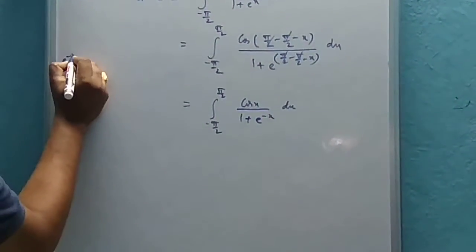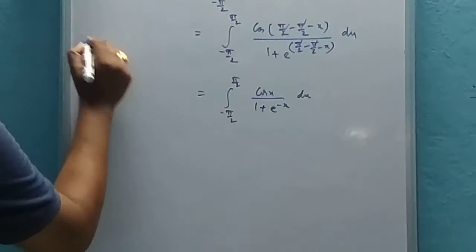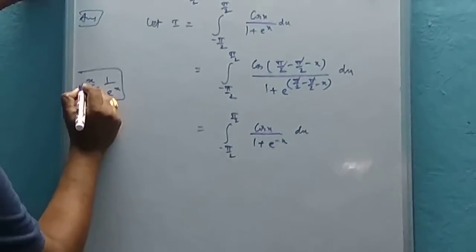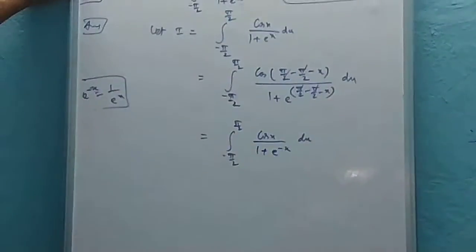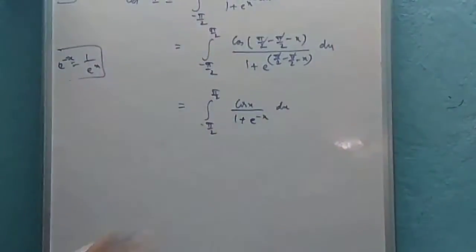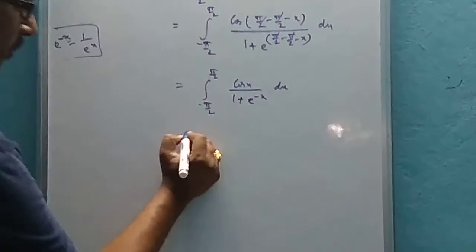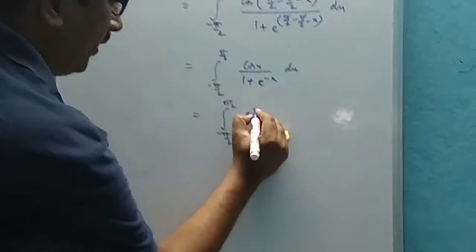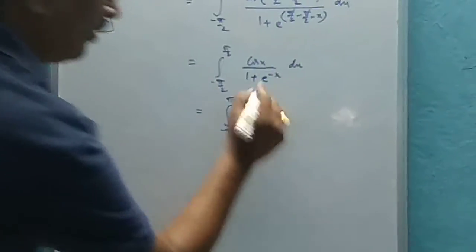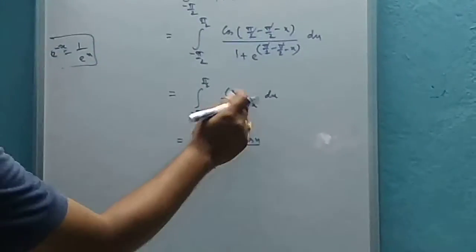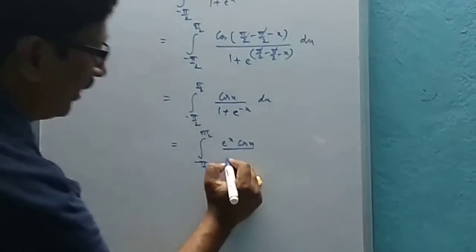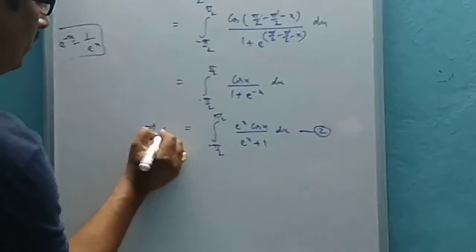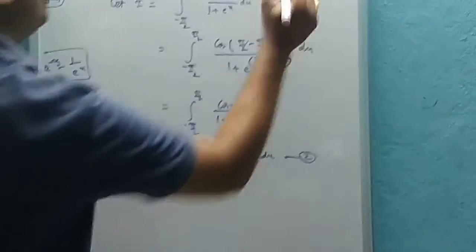Now, e to the power minus x can be written as 1 divided by e to the power x. Substituting this into the denominator: 1 plus 1 over e to the power x. Multiplying numerator and denominator by e to the power x gives: e to the power x times cos(x) divided by (e to the power x plus 1) dx. This is equation 2, and the original integral is equation 1.